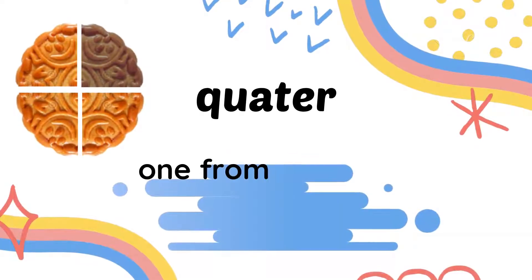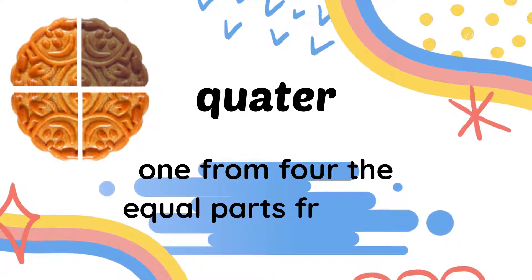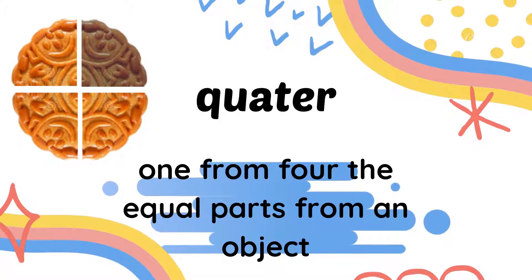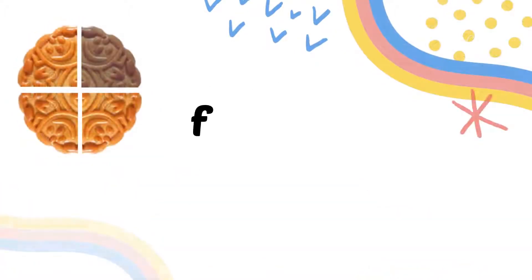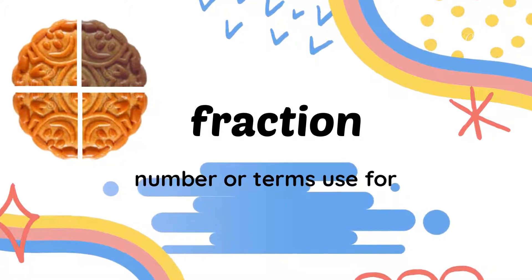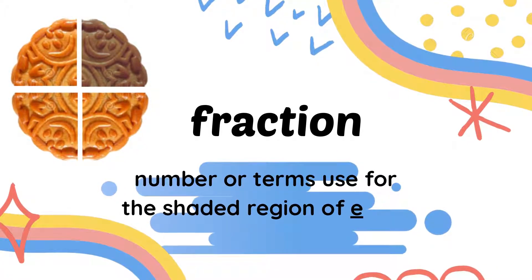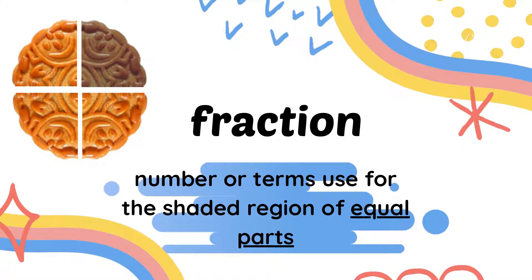The word 'quarter' brings the meaning of one from four of the equal parts from an object. Quarter means one from four of the equal parts from an object. 'Fraction' means the number or terms used for the shaded region of the equal parts.